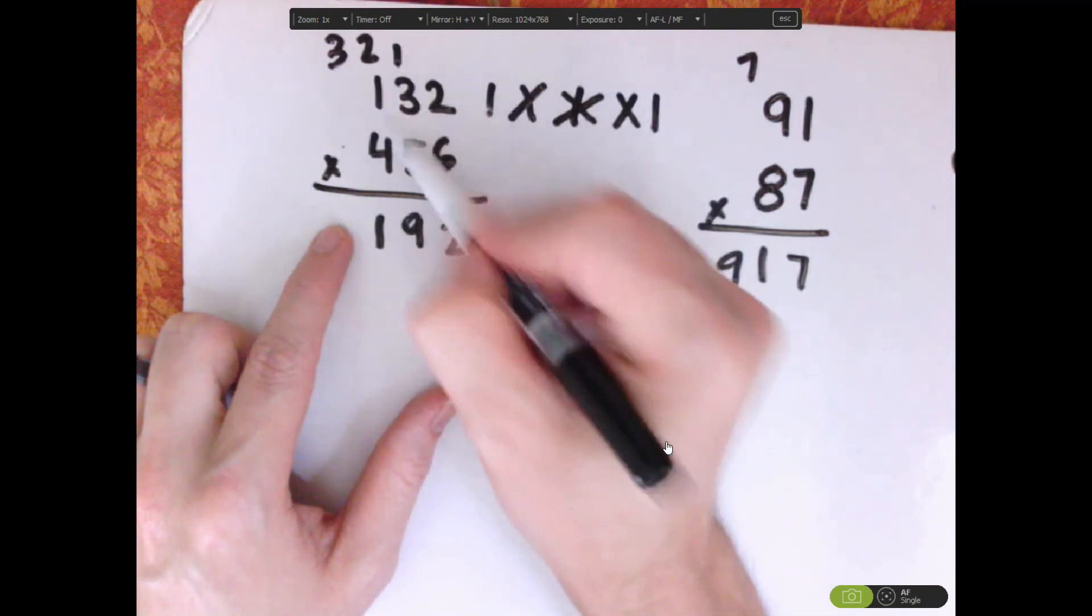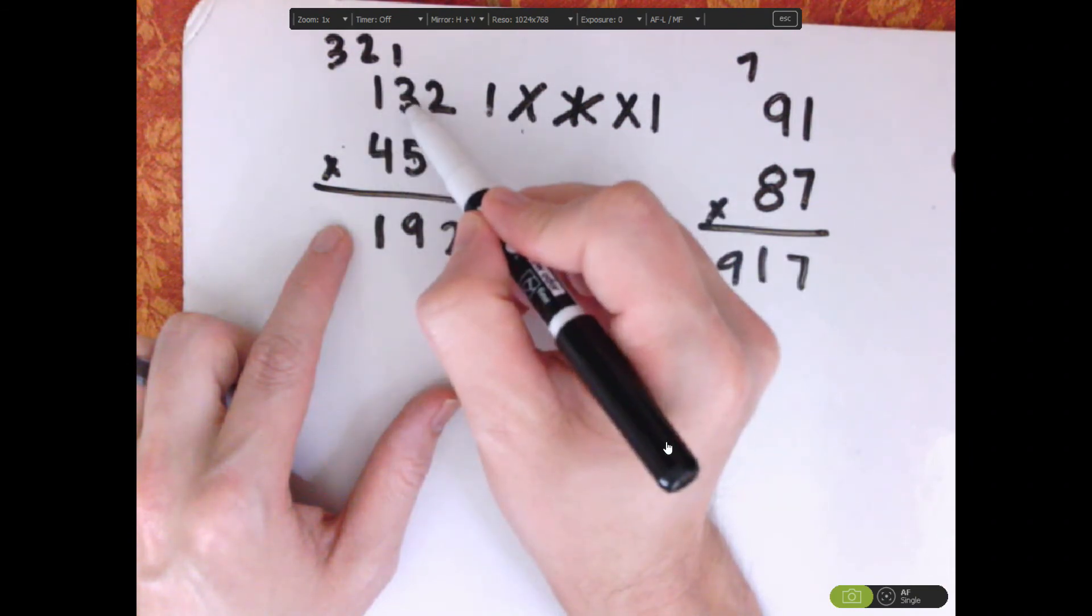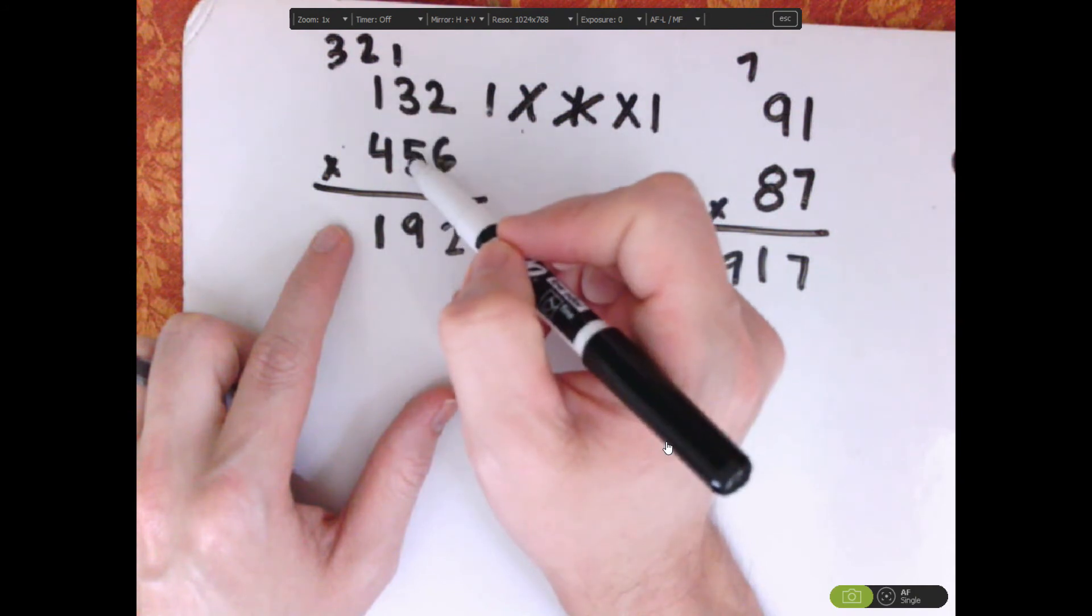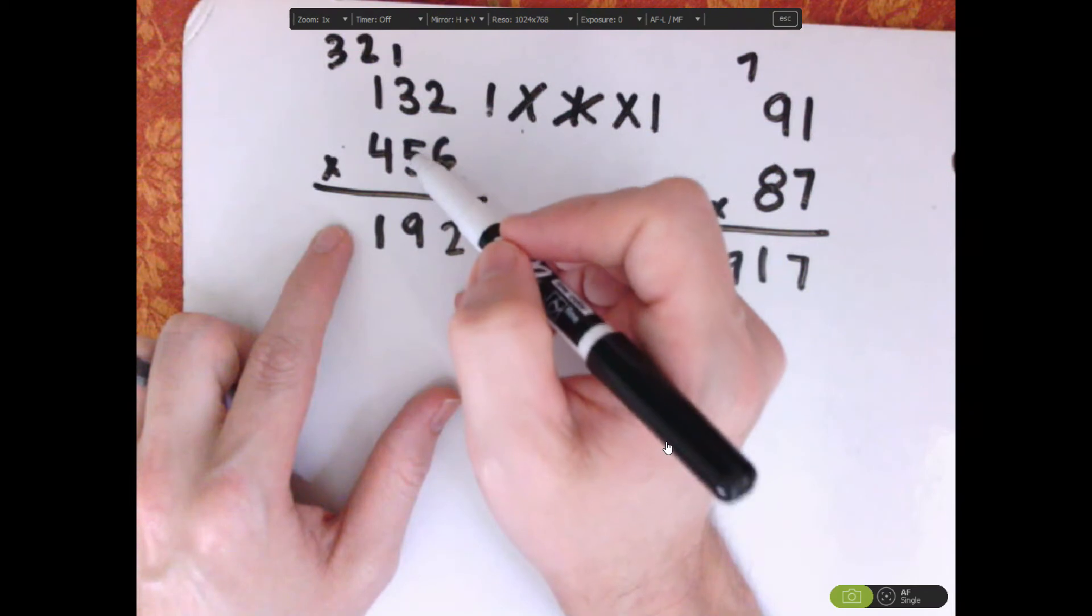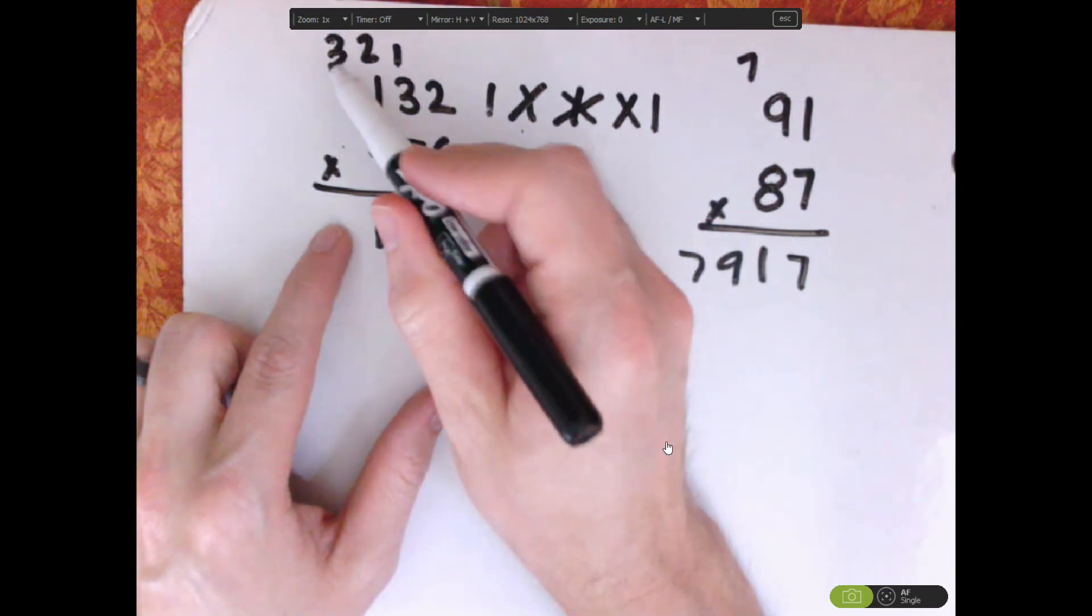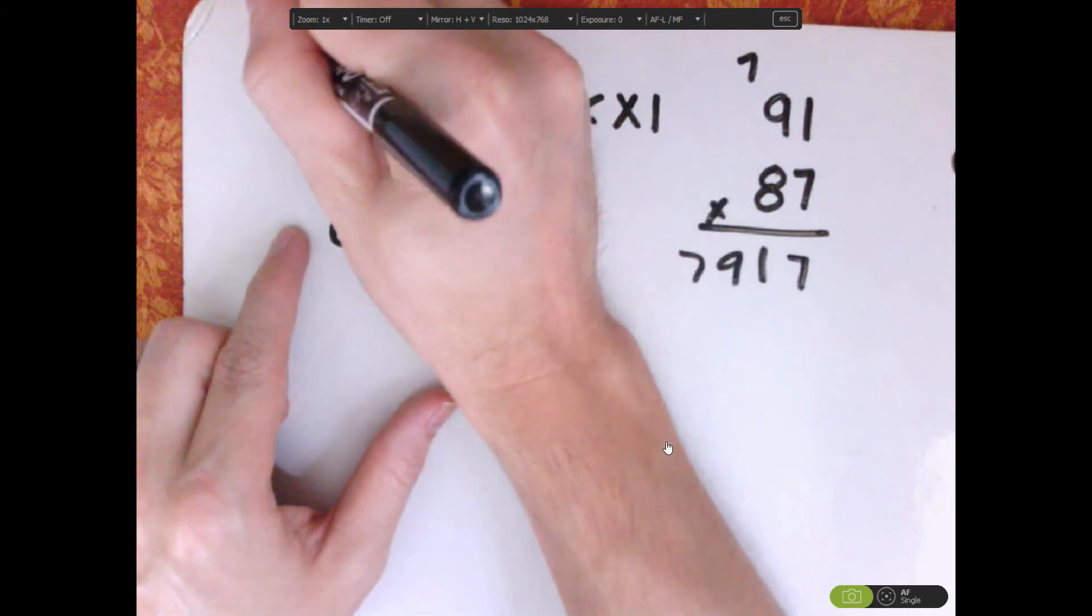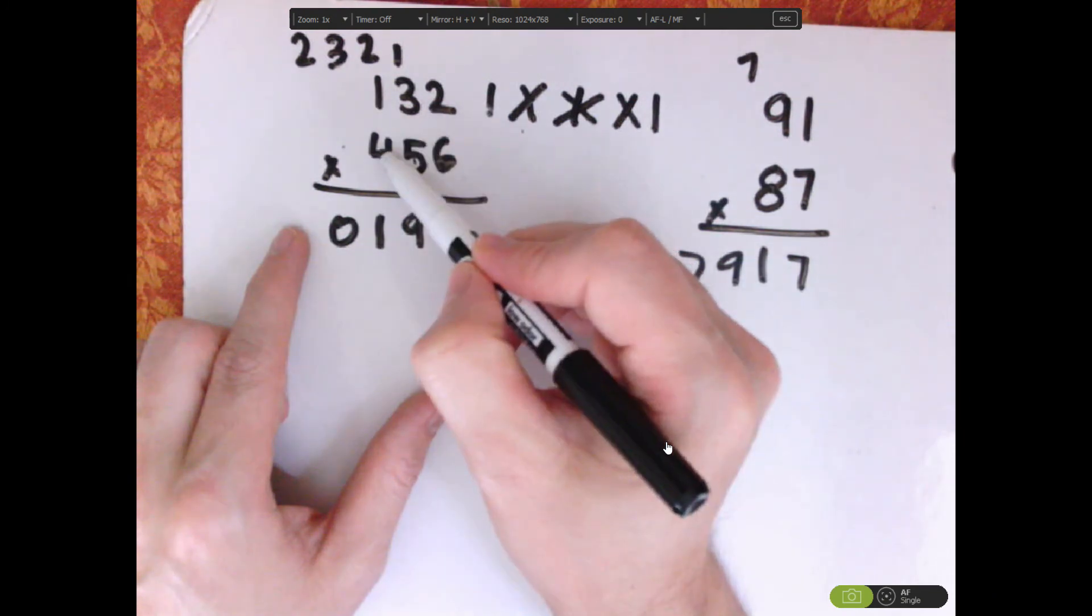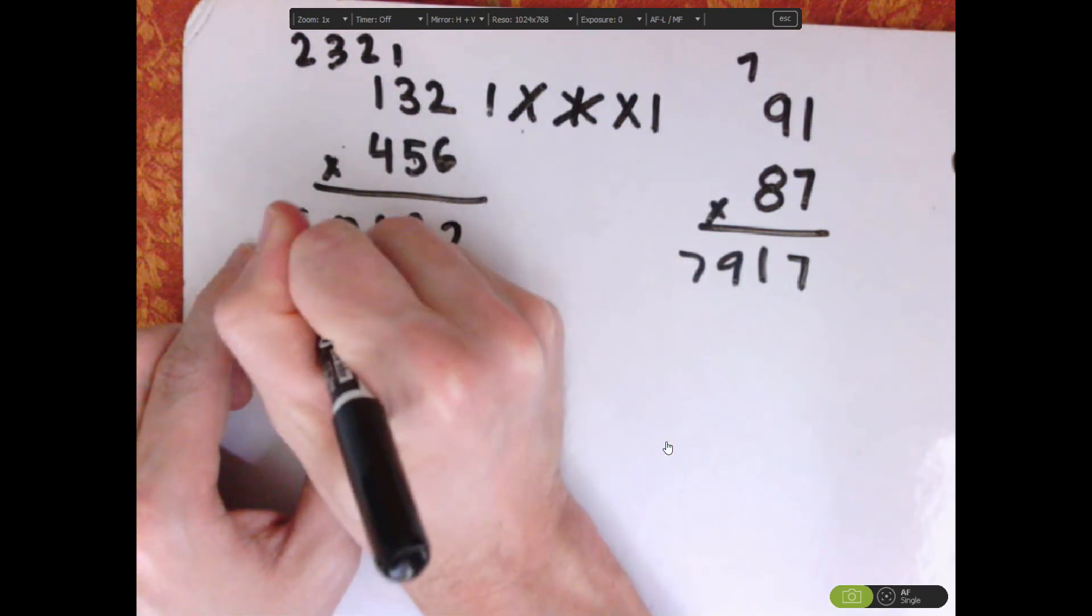Then criss-cross, we're at this point, so 4 times 3 is 12, and then that's 5, so 1 times 5 is 5, so 12 plus 5 is 17, plus 3 is 20, carry the 2. So, 1 times 4 is 4, so that's 4 plus 2, which is 6.